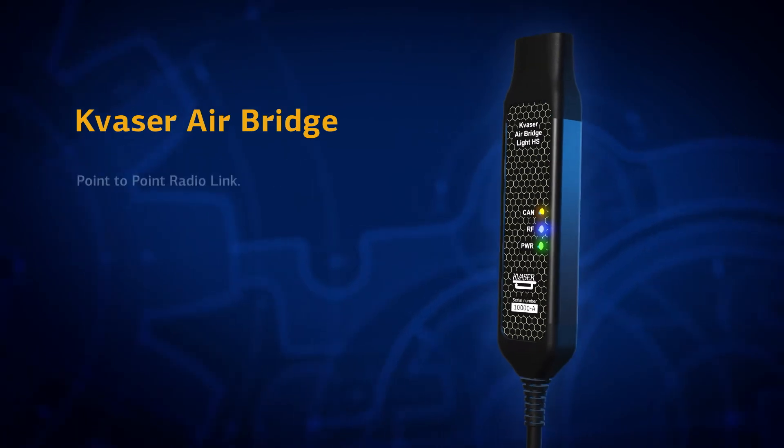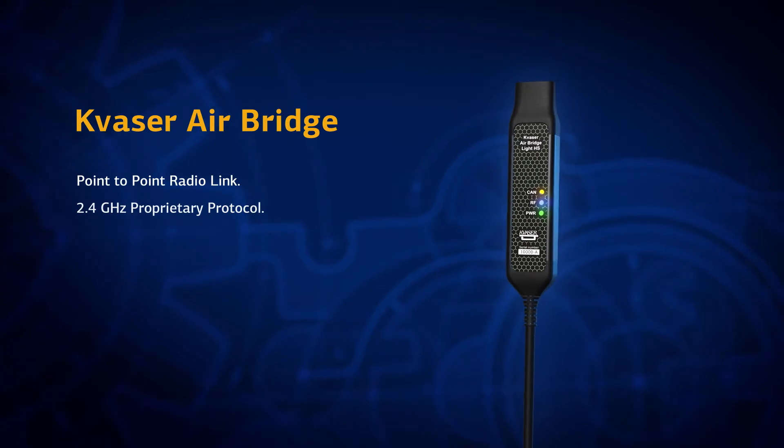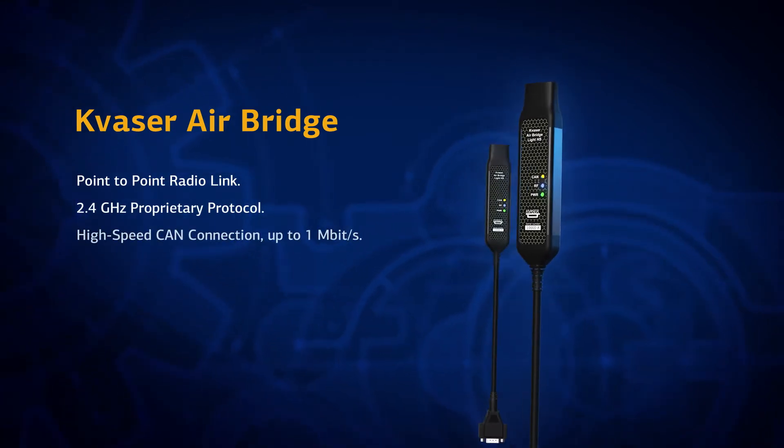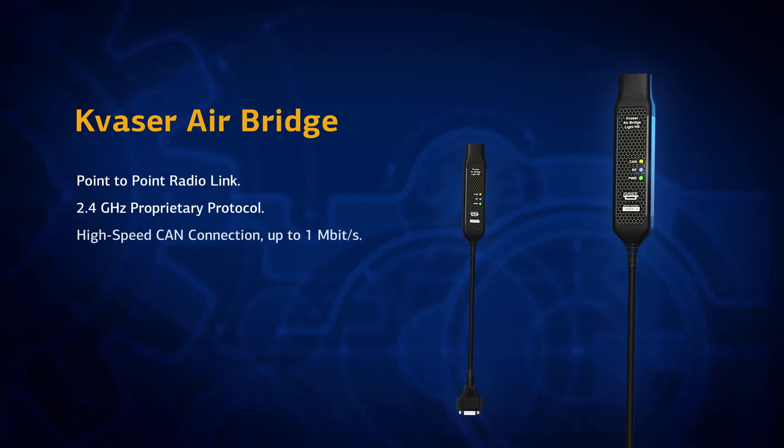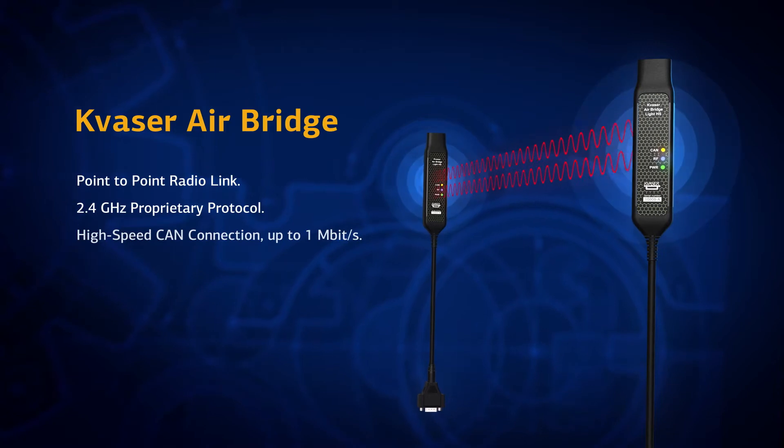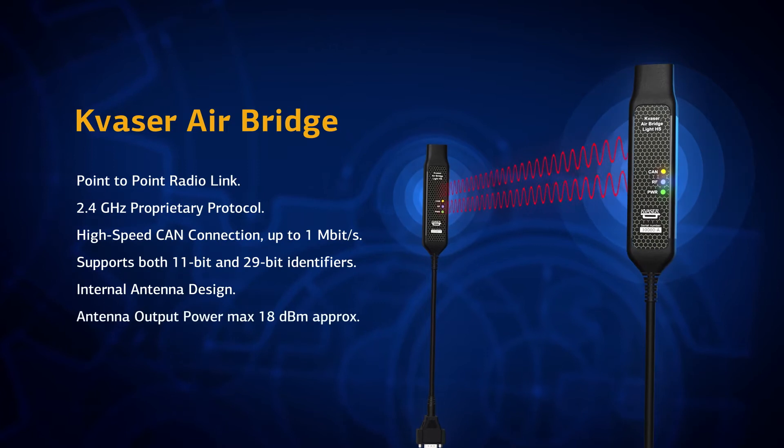Kvasa AirBridge is a point-to-point radio-based data link that operates in the 2.4 GHz band like many other wireless devices. The AirBridge is a CAN system bridge that can be used to transfer messages wirelessly between two CAN systems. AirBridge employs special features to make it a robust radio link.